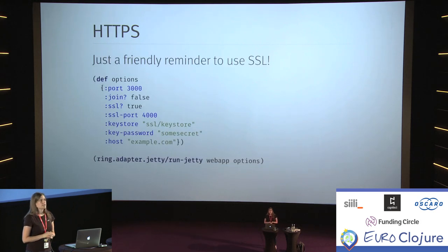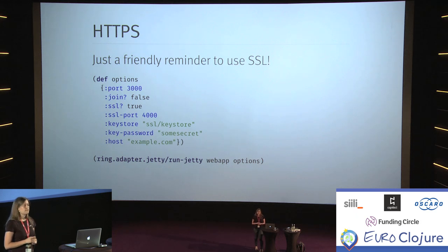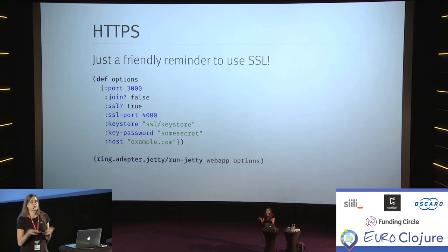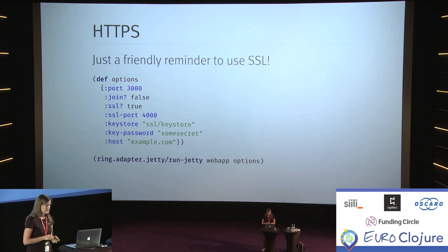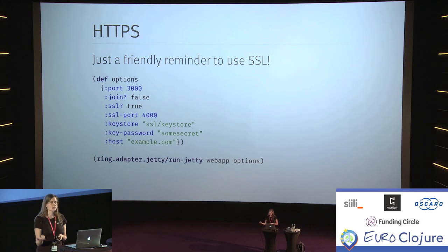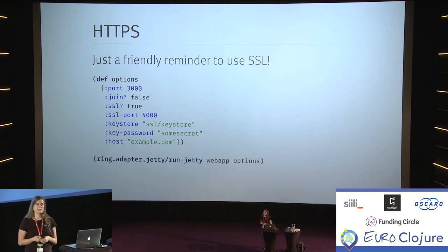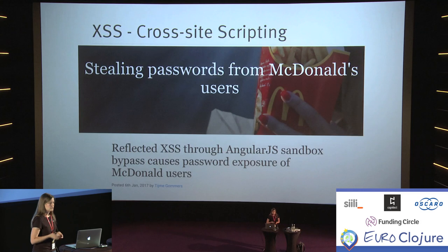I have a friendly reminder for you: use SSL. If we aren't using SSL, we're sending cookies and authentication information in clear text through the internet, and you're basically just opening a door wide for people to hack into your application. You can enable it in your Clojure application itself, or run your application behind a reverse proxy. The main point is: use SSL — that's what it's there for. With Let's Encrypt, it's easier than ever to get a certificate, so just turn it on.